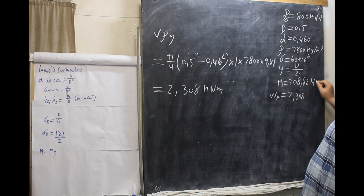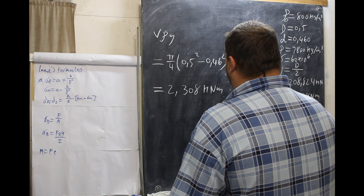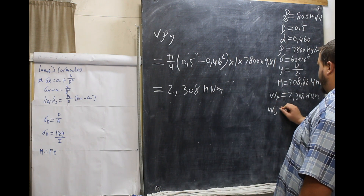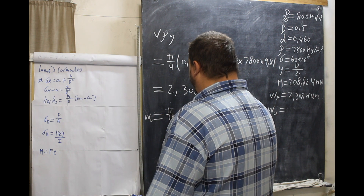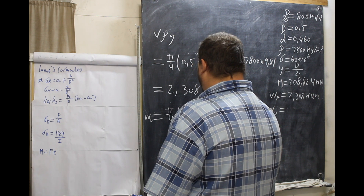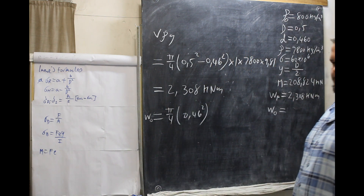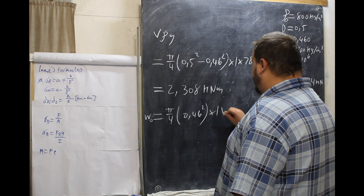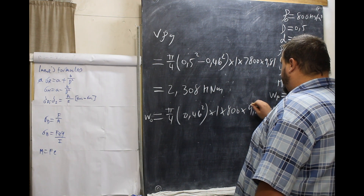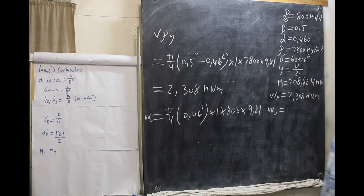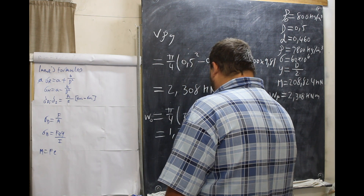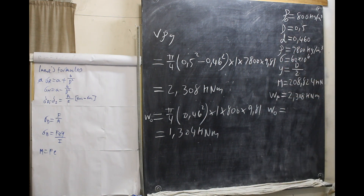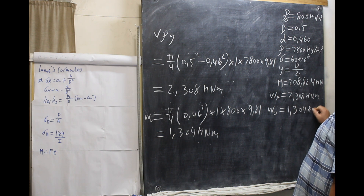2,308 kilonewton meters. Now we use the exact same formula for the weight of the oil. The only difference is the weight of oil is pi over 4 times 0.46 squared, times 1, times 800, times 9.81. And we are left with 1,304 kilonewton meters.